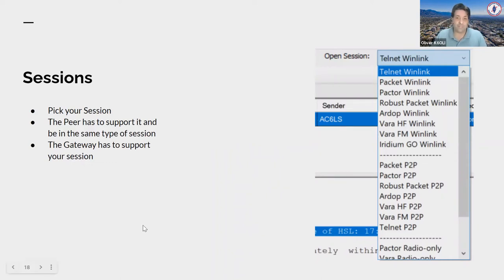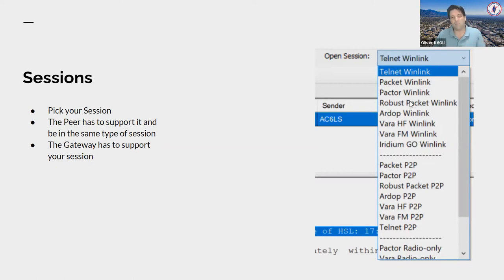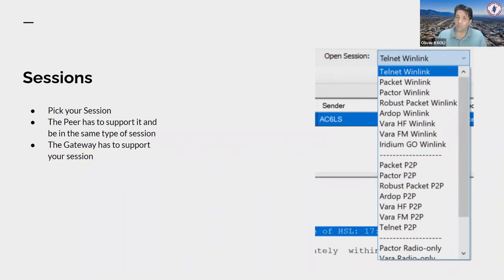Once you've posted your message to the Outbox, it's ready to go. Now you pick a session and tell WinLink how you want to send it. Telnet WinLink is via internet — but you can also choose Packet, Robust Packet (mostly used in Europe), RDOP (VARA-HF is better), VARA-FM high speed, Iridium satellite, or peer-to-peer options. Just keep in mind the gateway has to support your session.